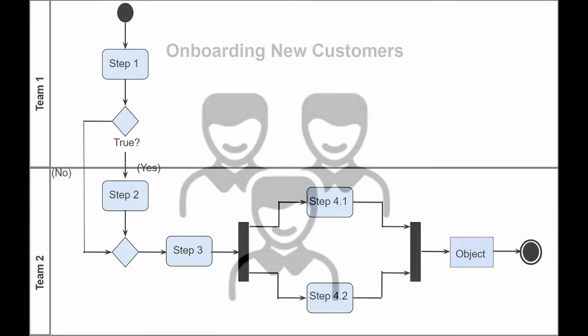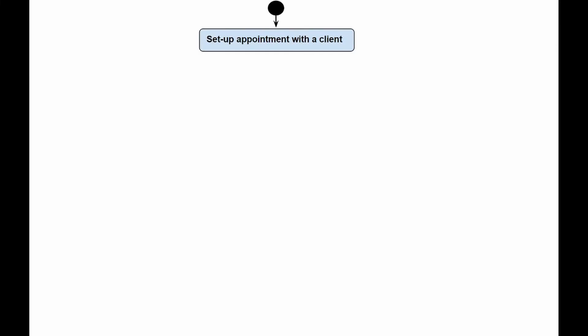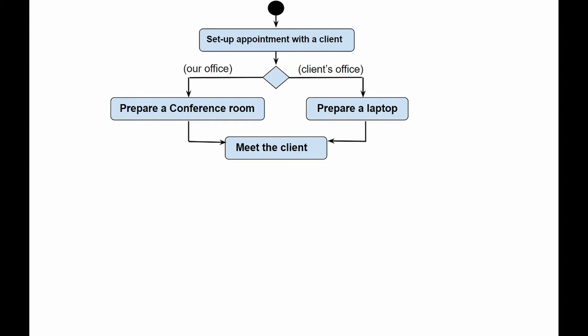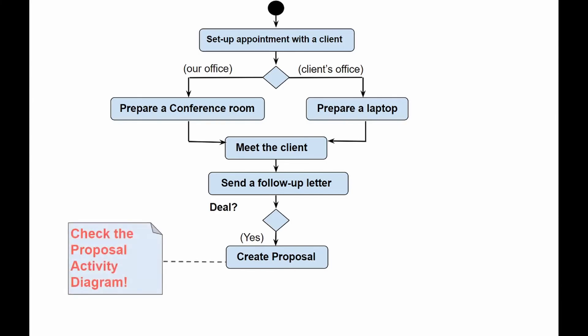Let's have a look at the activity diagram that describes the business process of onboarding a new client. First, we reach out to our potential client and arrange a meeting. Depending on whether the meeting will be in our company's office or the client's office, we prepare either a conference room or just take our laptop with us. Regardless of where the meeting takes place, we know the client wants to meet with us. After the meeting, we'll normally send a follow-up letter to the client. At the decision point, if we have a deal, we prepare the contract, noting that there is a separate activity diagram that reflects this process and needs to be followed.